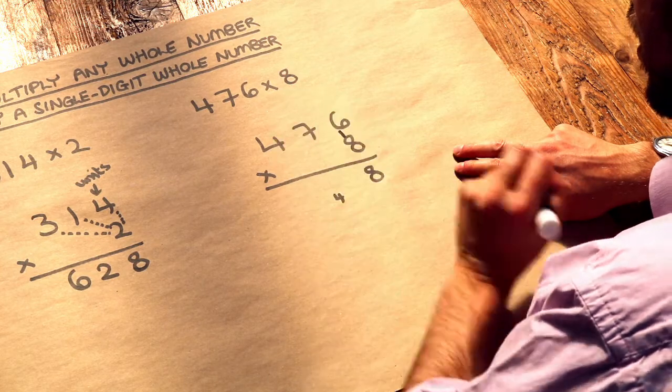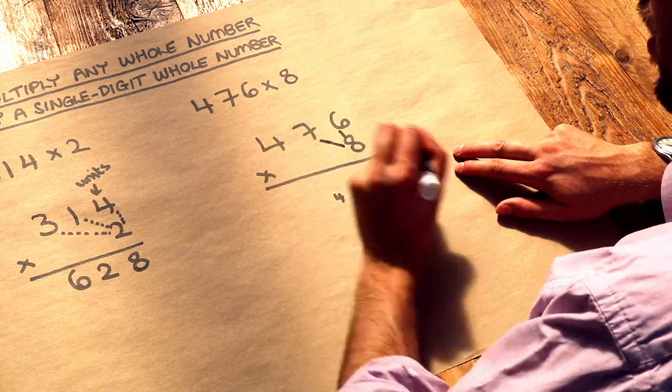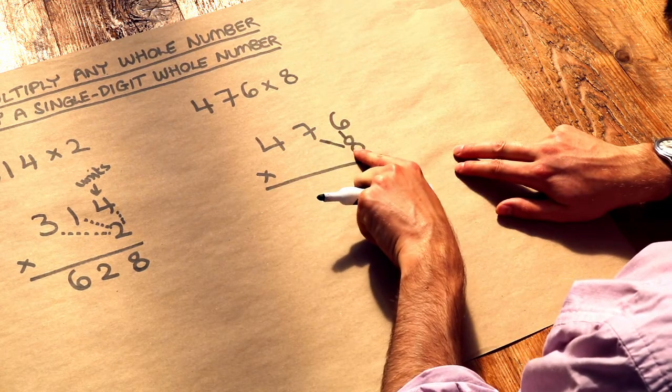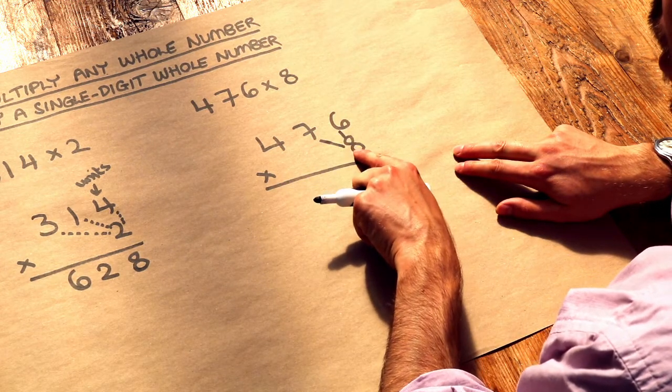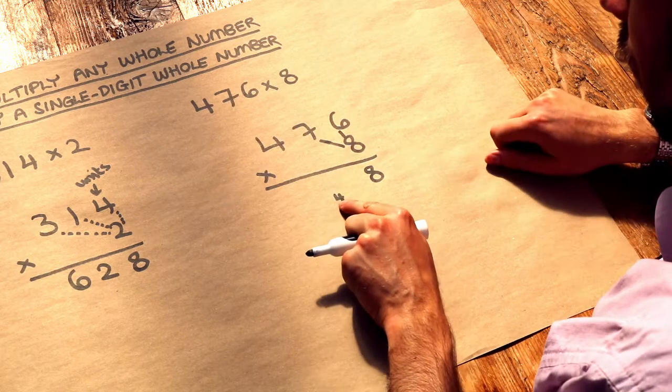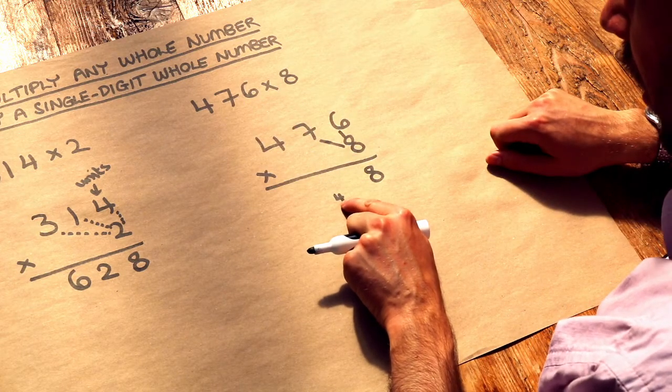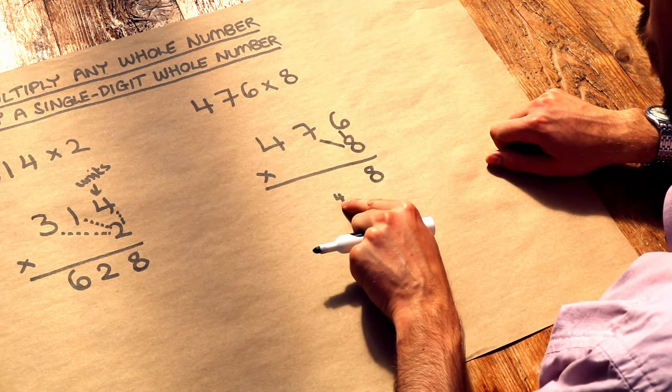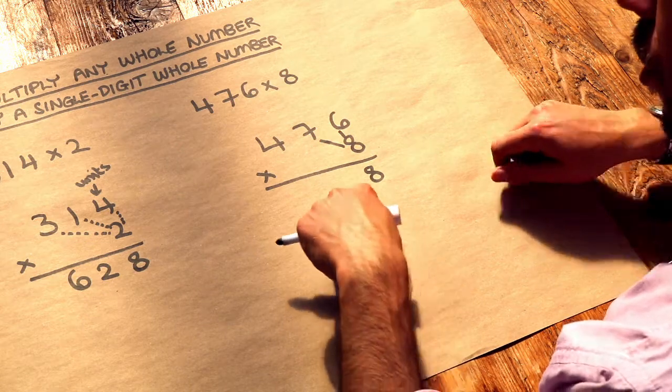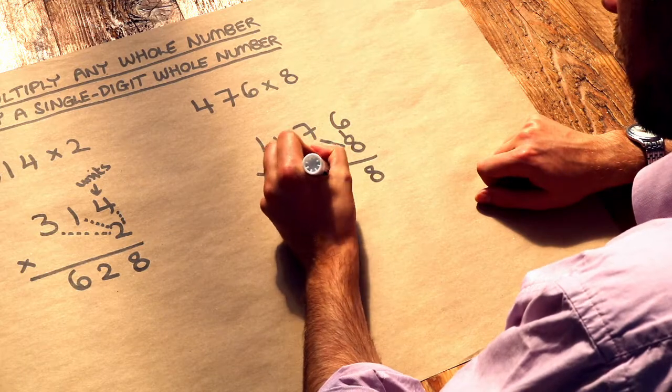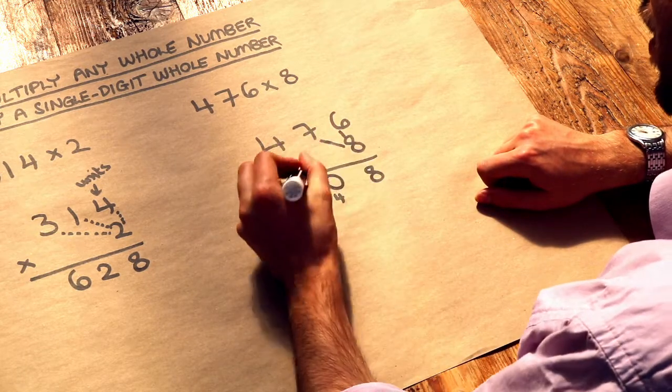So we've done the 6 times 8, we next want to do the 7 times 8, we're going right to left. Now 7 times 8 is 56, but we want to include that carry of 4 so we add on that 4 that we had before. So 7 times 8 is 56 and the 4 is 60. So again you put the units digit of your result here, so 60 the units digit is 0, and then we carry the 6.